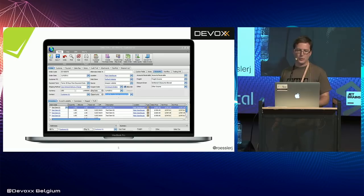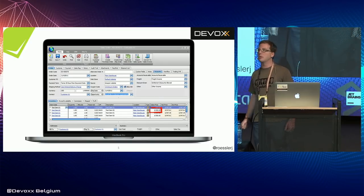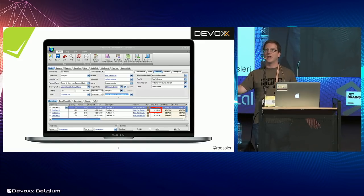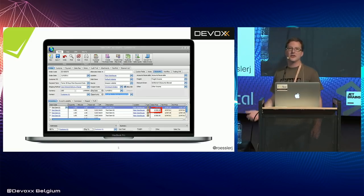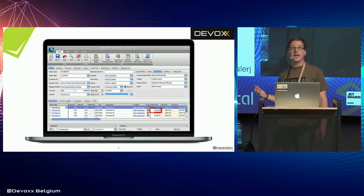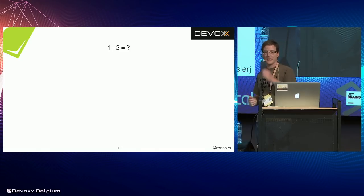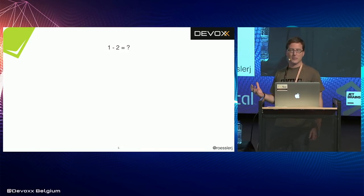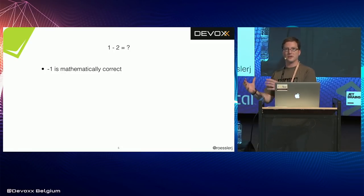How does AI actually work in testing? If you look at software you don't know and I ask whether a value is correct, you'd say you have no idea — you don't know the software, the data, or how it was configured. AI is in the exact same situation. Think about a simple calculation: one minus two. Mathematically it's minus one, and if you're developing a calculator, that's the correct answer — but it's not the only possible answer.